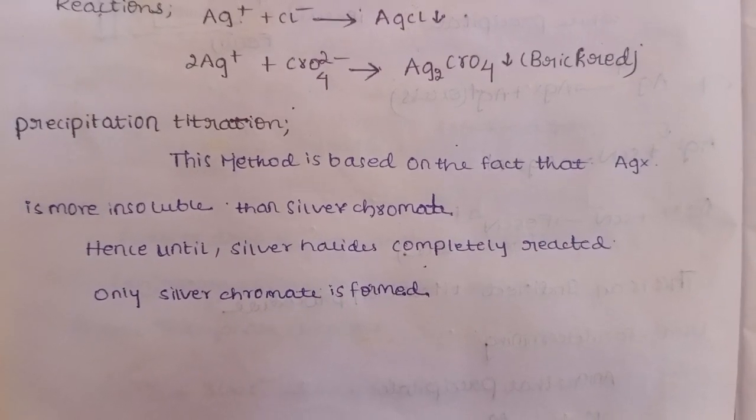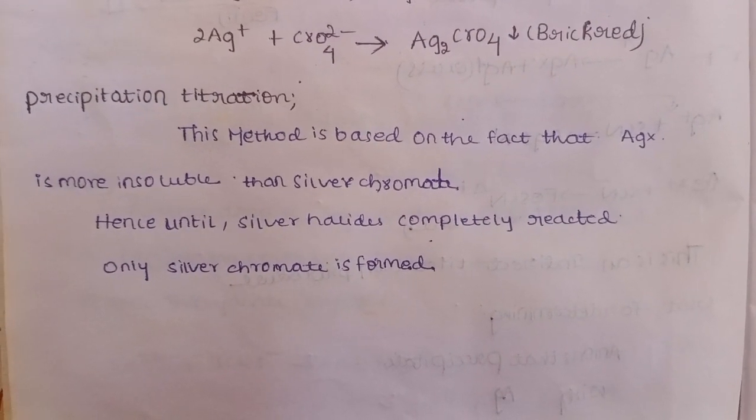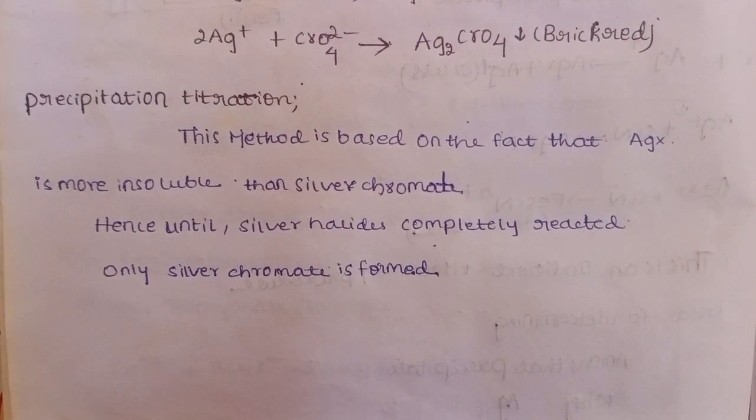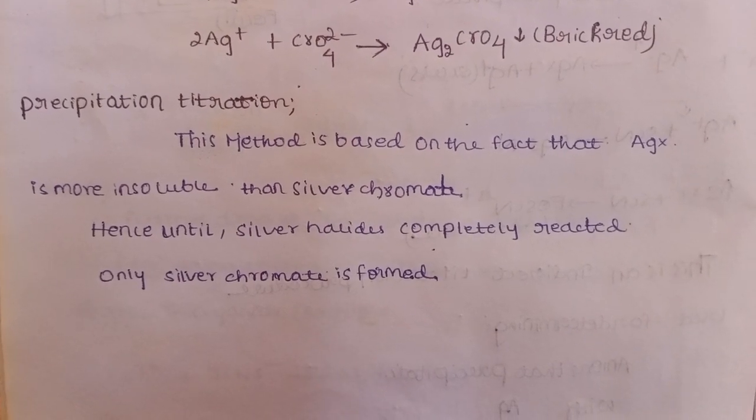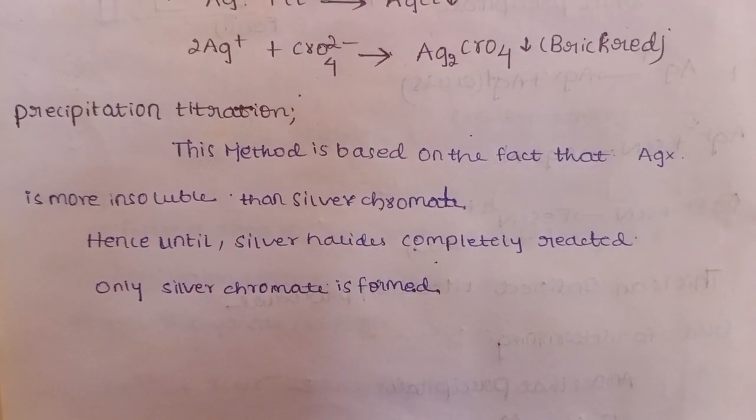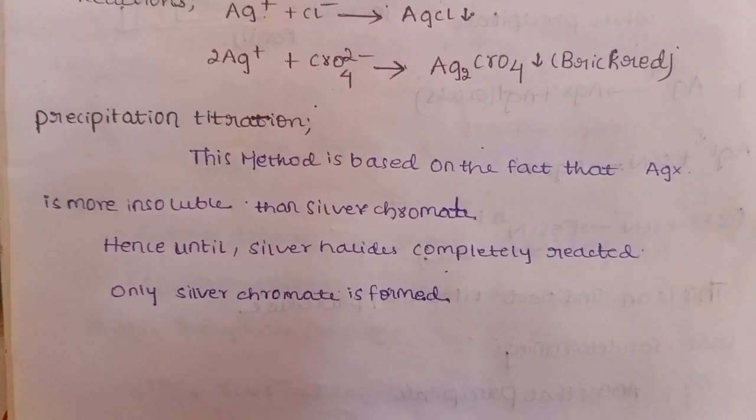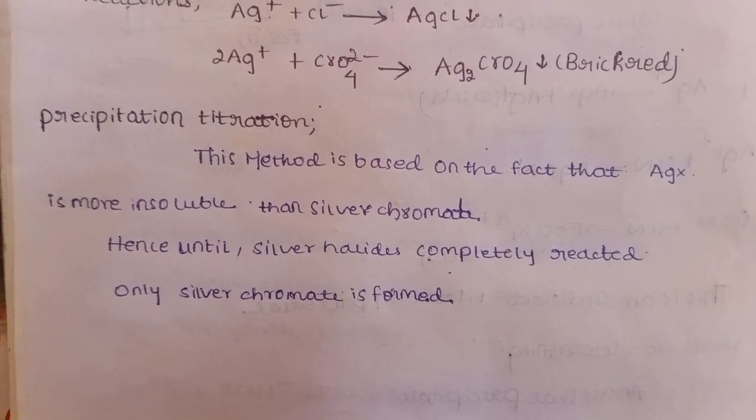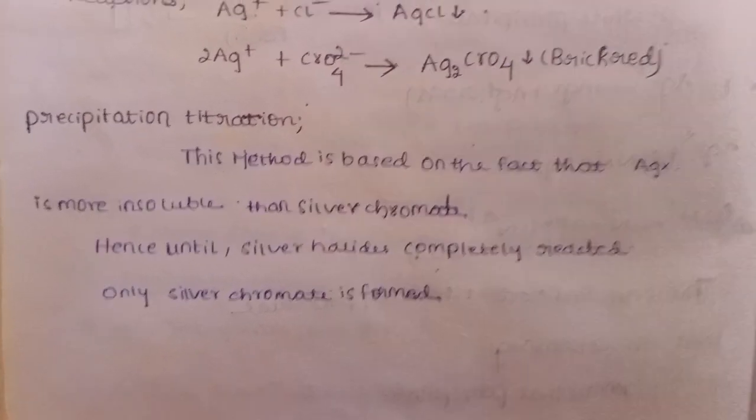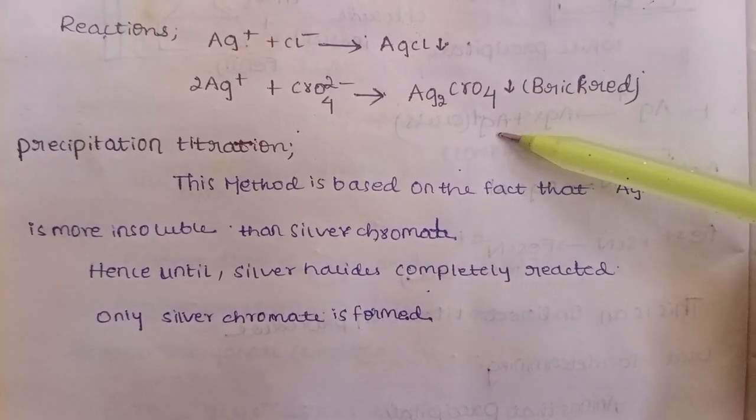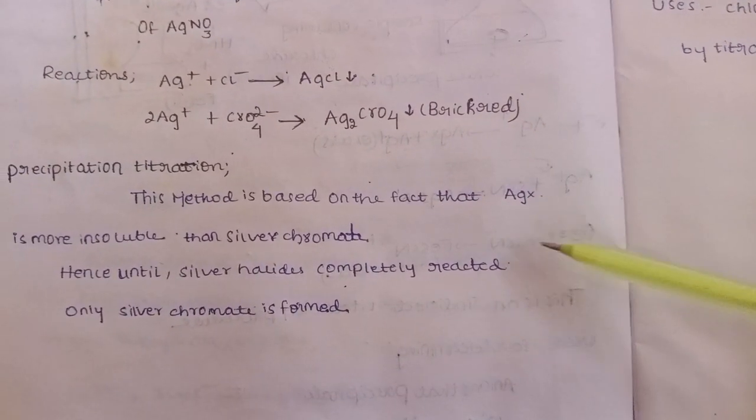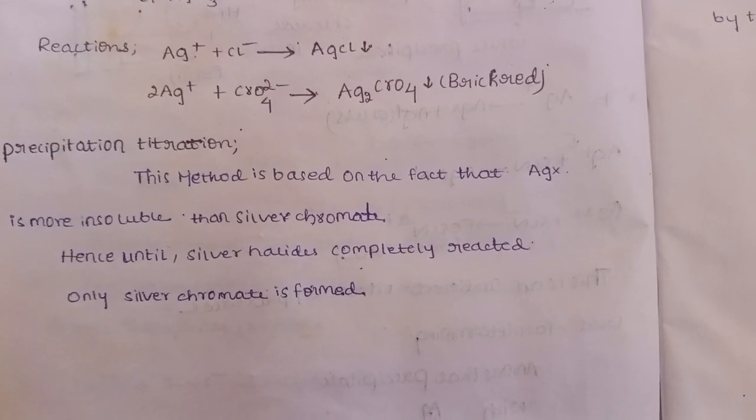This method is based on the fact that silver halide is more insoluble than silver chromate. Hence, until silver halide completely reacts, only then will the silver chromate form.